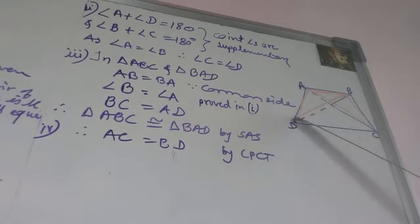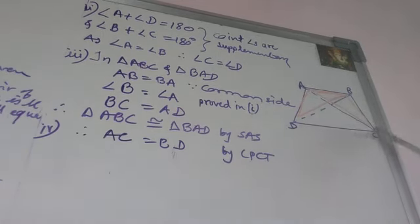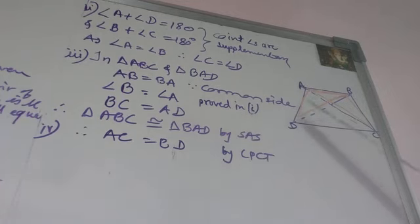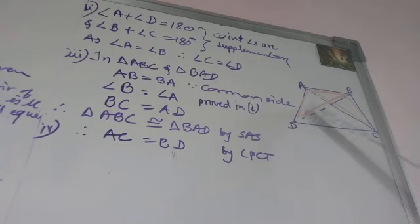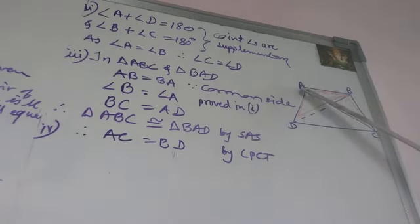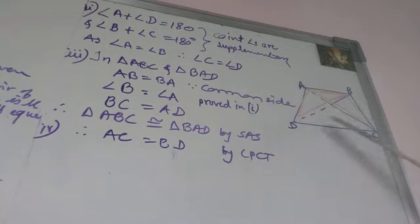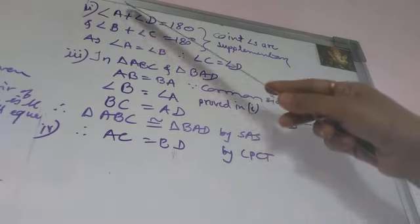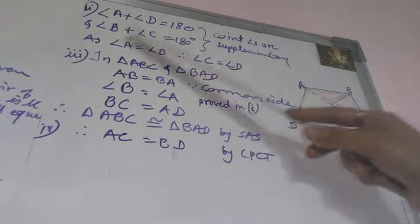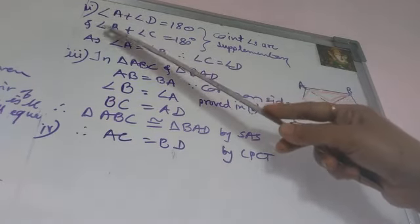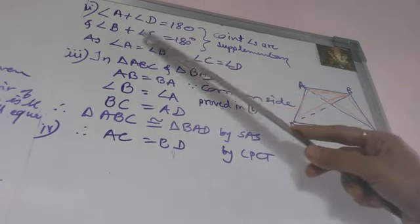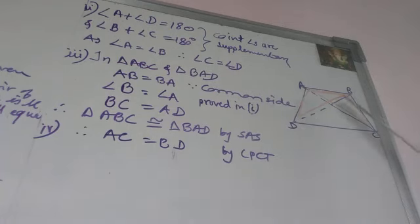For the second part, we need to show angle C equals angle D. Since AB is parallel to CD and AD is a transversal, angle A plus angle D equals 180 degrees. Similarly, angle B plus angle C equals 180 degrees. Since angle A equals angle B, equating both expressions gives angle D equals angle C.